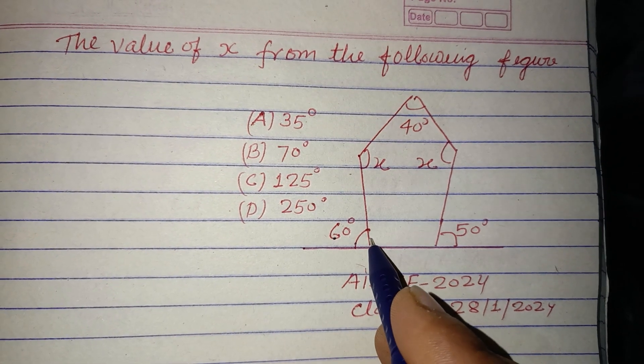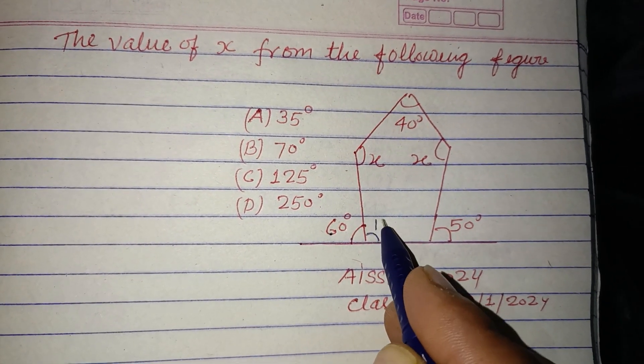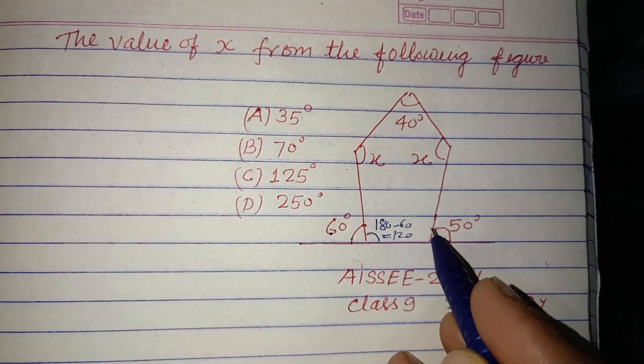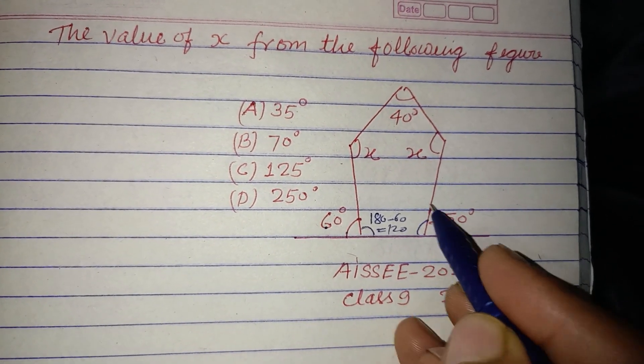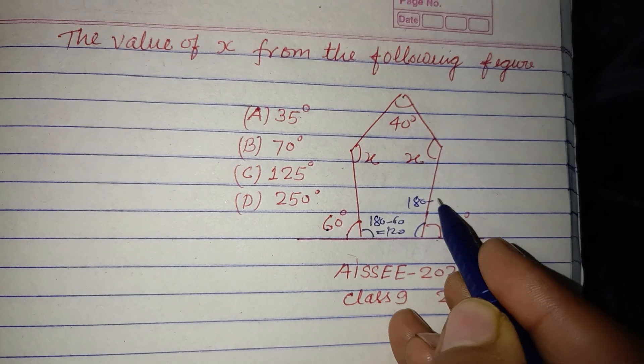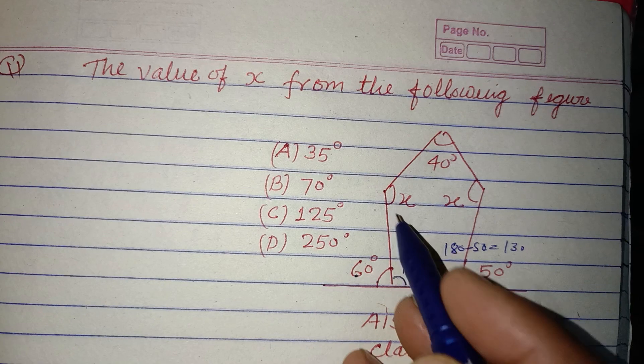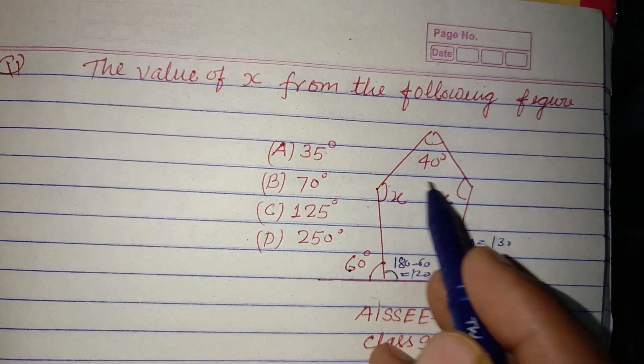Therefore, this angle will be 180 minus 60 equal to 120. And this is also a linear pair, so this is 180 minus 50, which is 130. Now, sum of all angles - there are five angles, one, two, three, four, five.